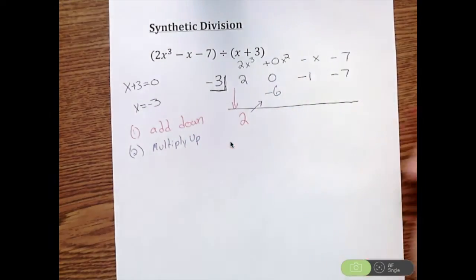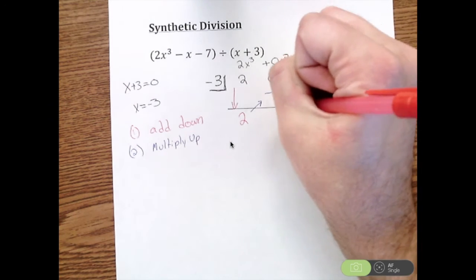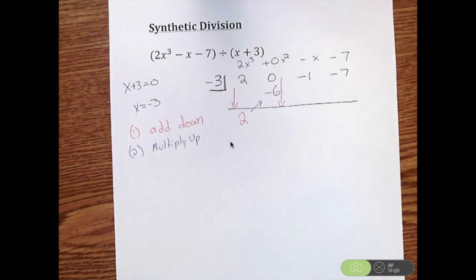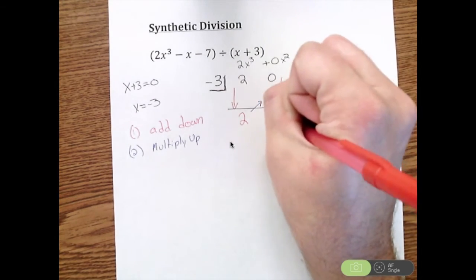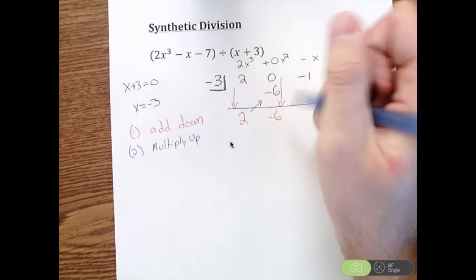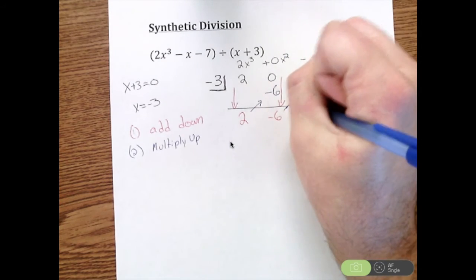So again we add down. 0 plus negative 6 is negative 6. And then we've got to multiply to go back up. So I'm going to take negative 6 times negative 3, which is 18.